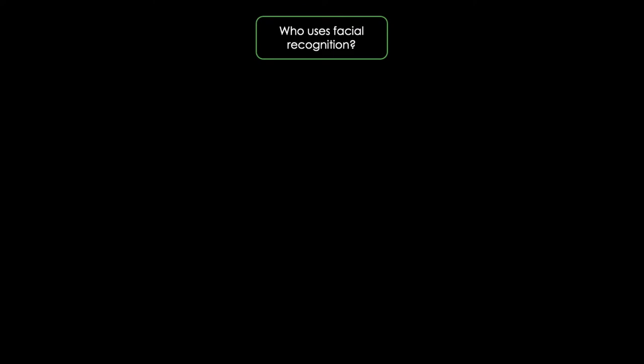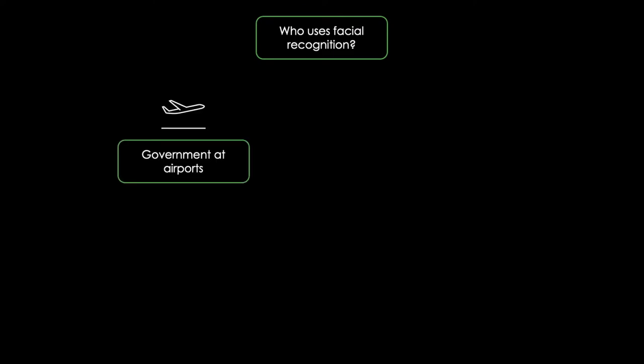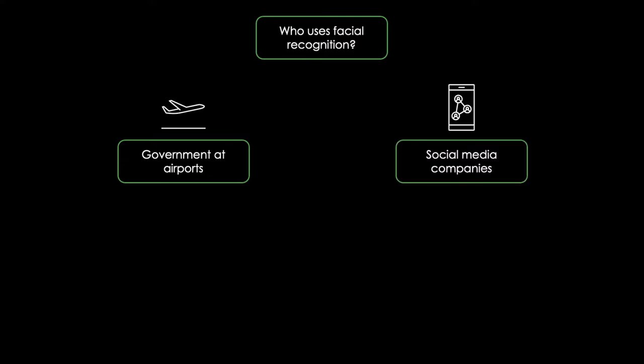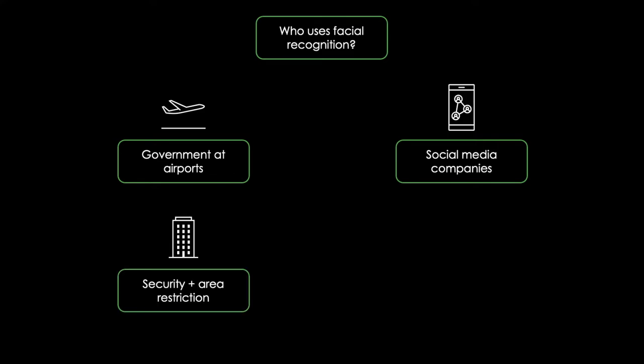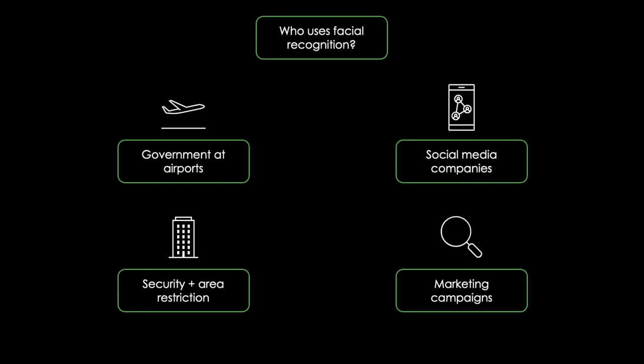Let's look at where facial recognition is used. Facial recognition systems can monitor people coming and going in airports and can also be used for passport control. Social media companies like Facebook use such algorithms to spot faces when you upload a photo to the platform. Businesses use facial recognition on security entrances and restricted areas to limit access, but also to foster marketing campaigns by analyzing the customer's gender, age and ethnicity to target specific consumer groups.